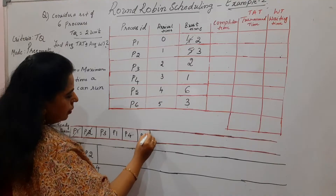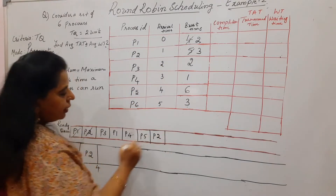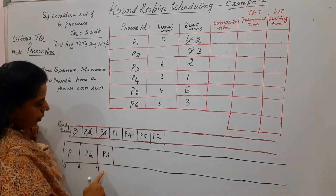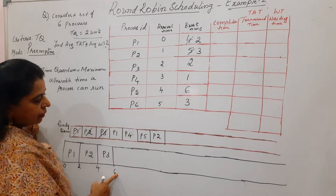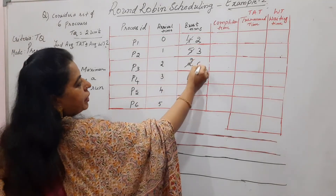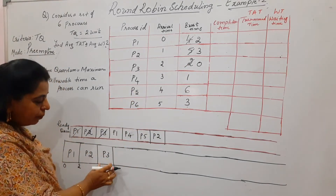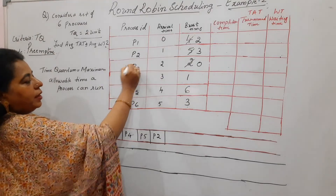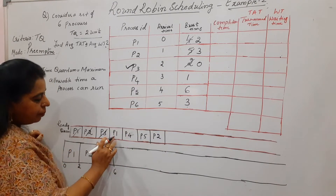At time unit four, P4 and P5 have arrived and are placed in the ready queue. P2 still has pending burst time so it will return later. Next, P3 gets scheduled for two units and stops at time unit six. P3's burst time is exactly two, equal to the time quantum, so P3 completes in one go with remaining burst time zero — it won't appear again.